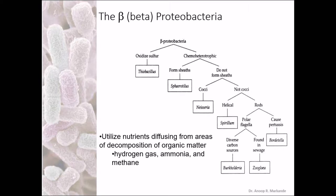Beta Proteobacteria: if they oxidize sulfur, the example is Thiobacillus. If they form a sheath — an extra layer on the bacterial surface — the example is Sphaerotilus. If they do not have a sheath, example is a usual coccus like Neisseria, which causes diseases like gonorrhea. If they are helical, the example is Spirillum. If they are rods with polar flagellum, examples are Burkholderia or Zoogloea. If they cause pertussis, they are Bordetella.